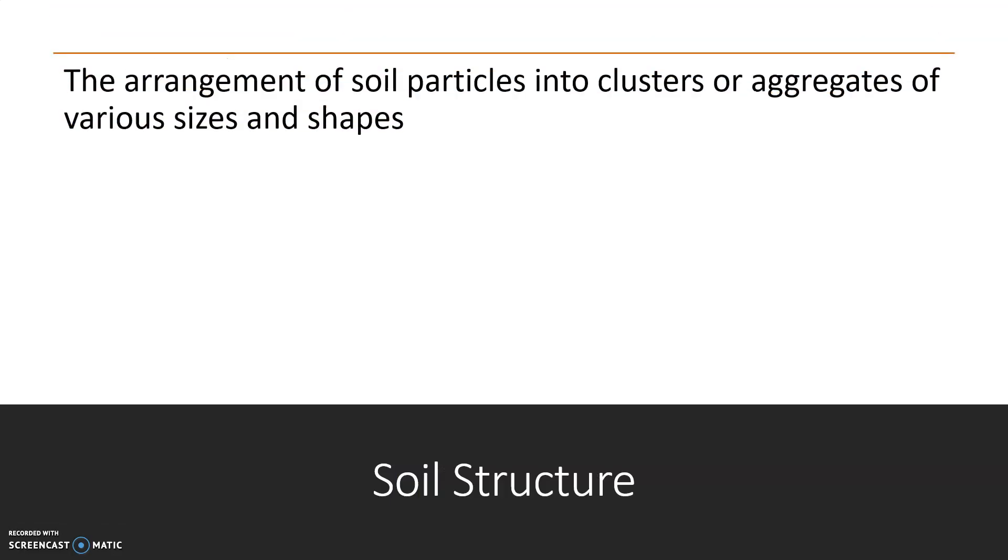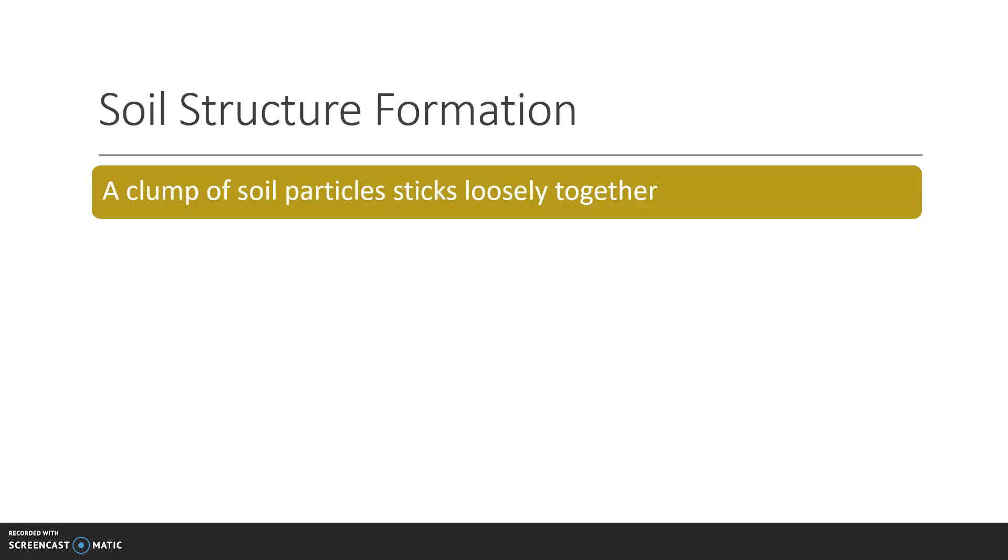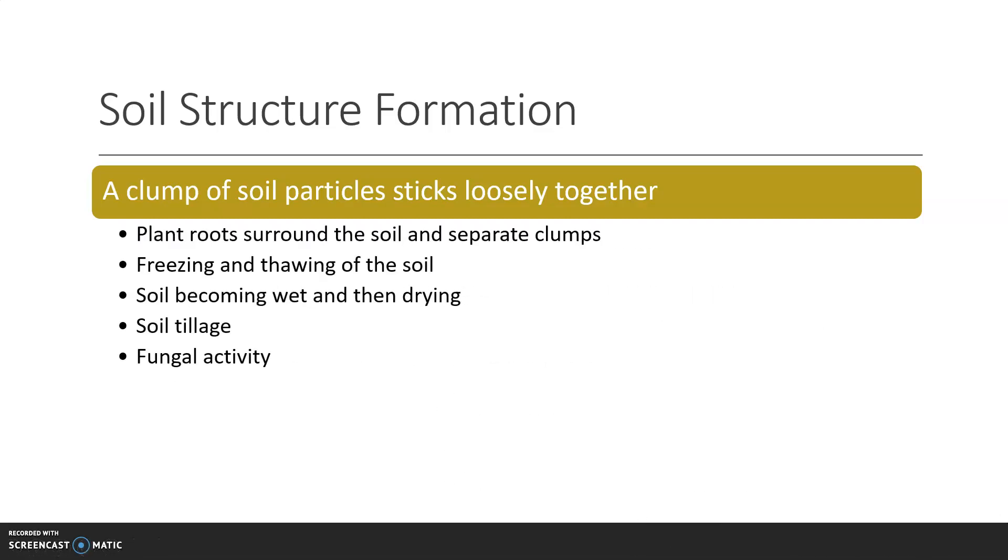Soil structure is the arrangement of soil particles into clusters or aggregates of various sizes and shapes. Aggregates that occur naturally are called peds, while aggregates that are caused by tillage are called clods. Soil structures form when a clump of soil particles stick loosely together. This can happen when plant roots surround the soil and separate clumps, when the soil freezes and thaws, when the soil becomes wet and dries repeatedly, soil tillage and fungal activity.